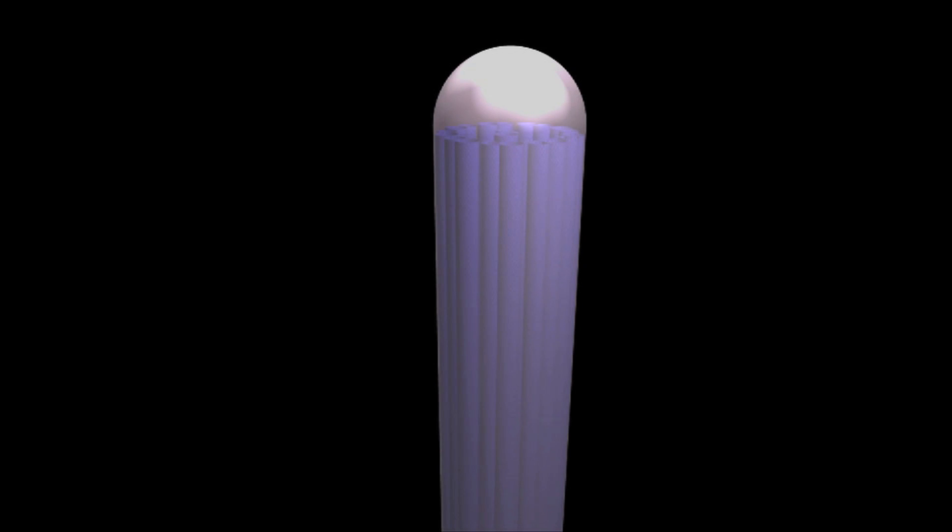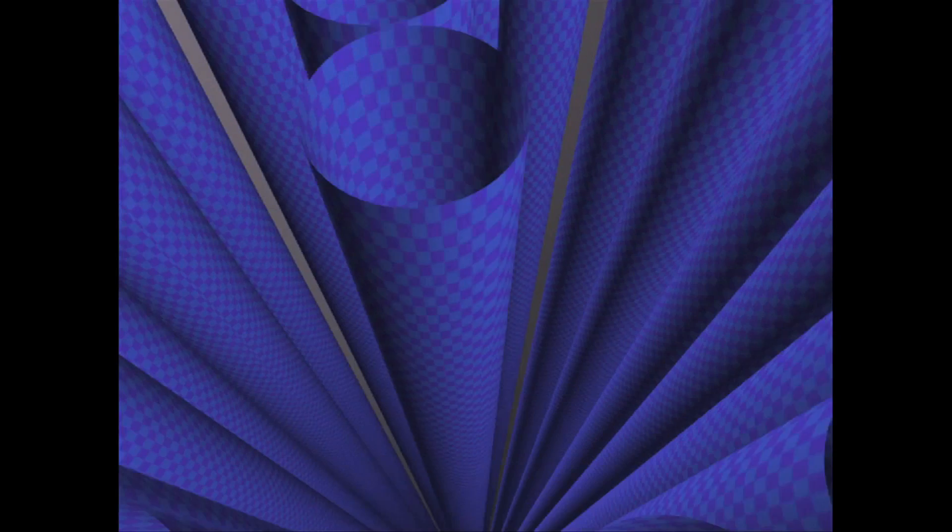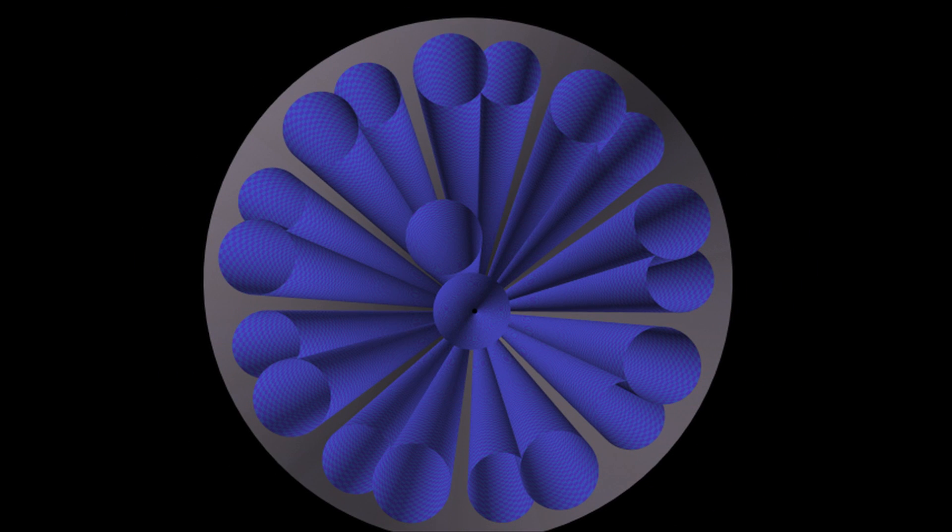To build our cilium, we start with a support structure. Like the internal steel framework that holds up a skyscraper, groups of microtubules, tiny long tubes, create the cilium's frame. Each cilium needs a single pair of microtubules in the center and nine sets of doublet microtubules in an outer ring to stand strong.